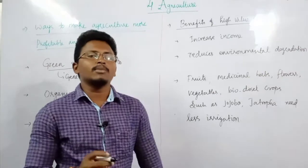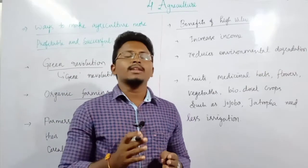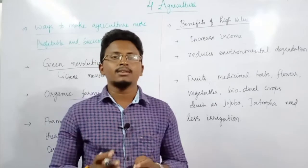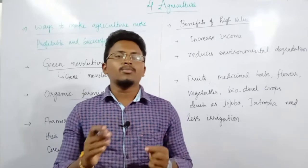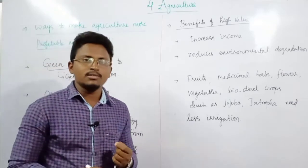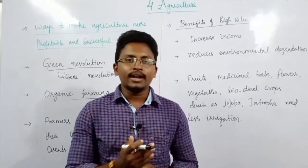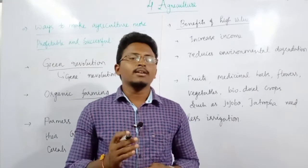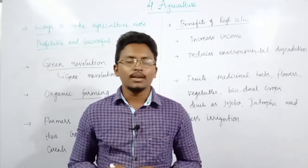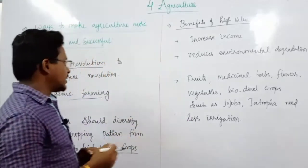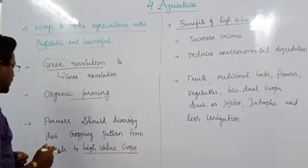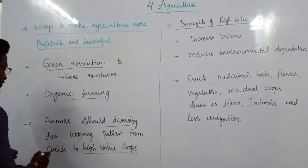The next alternative is organic farming — using only natural fertilizers instead of chemical or factory-made products. This can also help farmers improve their income, as organic farming has more growth and attractiveness in the country today. People are increasingly preferring food items from organic production.